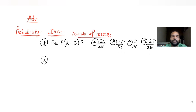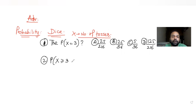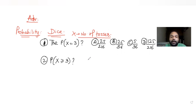The second question asks us to find the probability that X is greater than or equal to 3 — that is, the probability that 3 or more tosses are required to obtain a 6 when you throw a die.